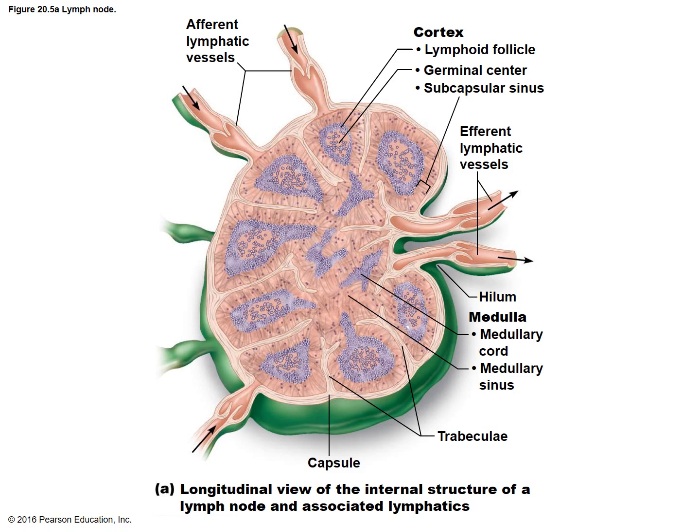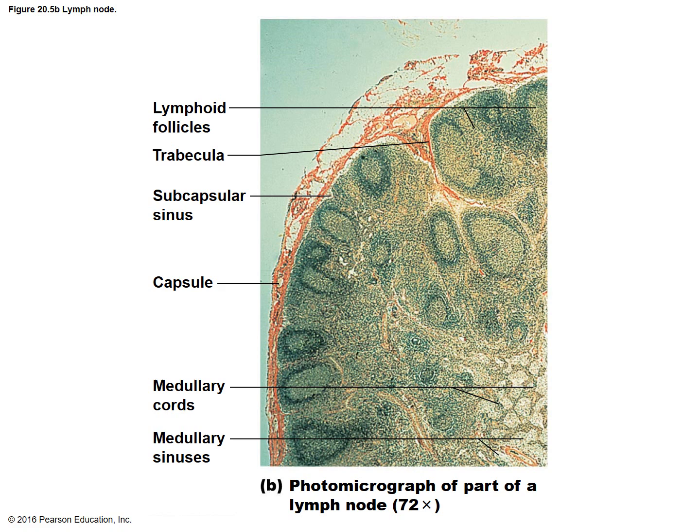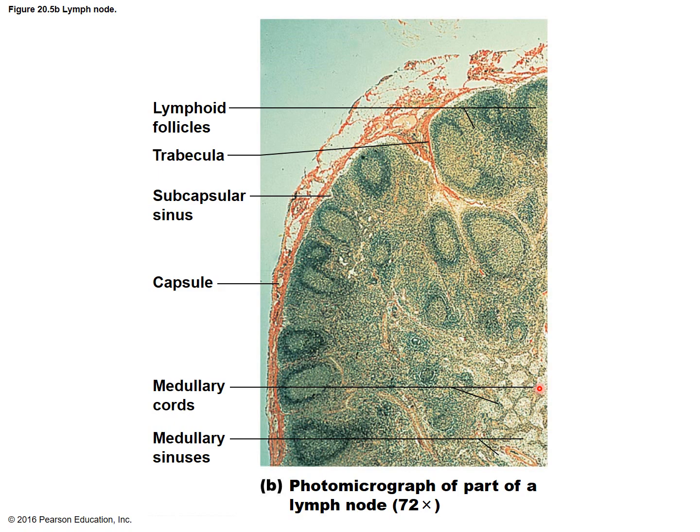Here is a photomicrograph of a lymph node, where you can see the capsule, the medulla area, and the sinuses where lymph flows through. The lymph flows in through the afferent lymphatic vessel. A helpful memory tip: think of it alphabetically — 'A' for afferent means arriving; efferent means exiting. The lymph travels in through the afferent vessels, through the sinuses — first the subcapsular, then the medullary sinuses — and finally leaves through the efferent vessel.